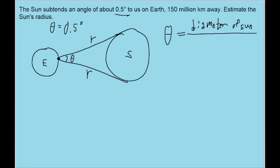And it's divided by the radius of the arc, so r, which is the distance from the Earth to the sun.